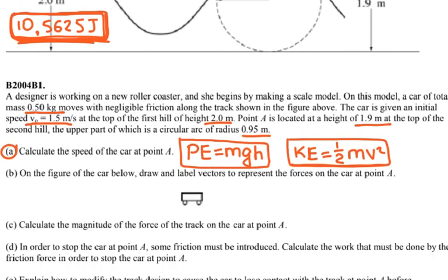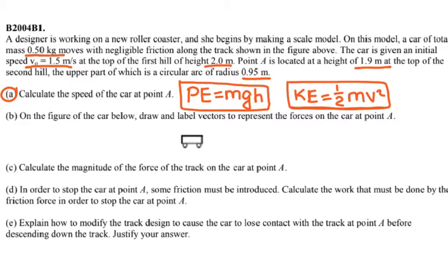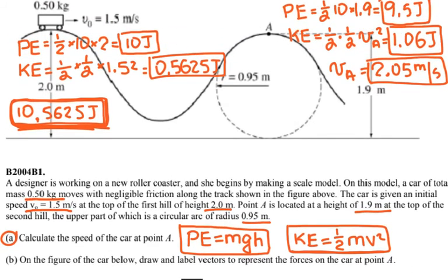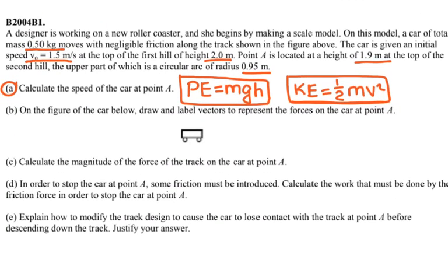For part B, they ask you to draw the forces acting on the car at the top of point A. At the top of point A, I have mg and the normal force. The next one is centripetal acceleration, but on the AP exam, if they ask you to draw the forces, you don't show centripetal acceleration. So my forces would be mg and the normal force. That's all the forces acting on the object.